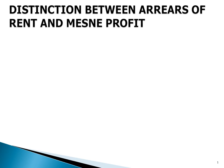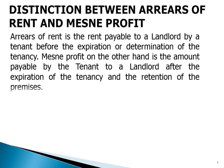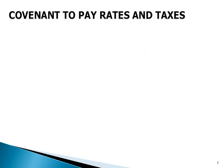The distinction between arrears of rent and mesne profits: arrears of rent is the rent payable to the landlord by the tenant before the expiration or determination of the tenancy. Mesne profits, on the other hand, is the amount payable by the tenant to the landlord after the expiration of the tenancy and the retention of the premises.